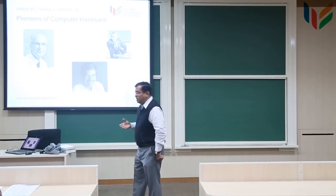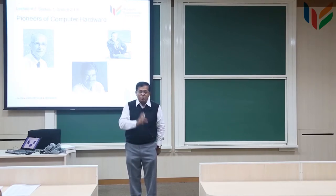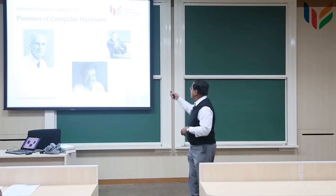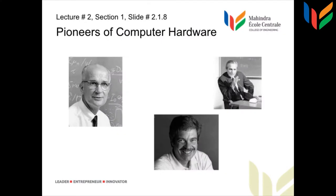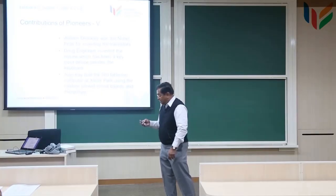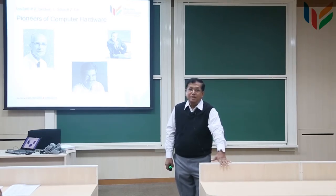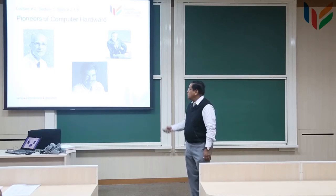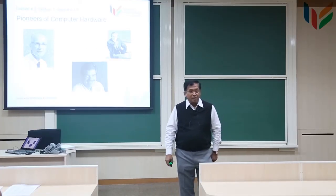There are positioning devices and pointing devices, and the mouse is a pointing device. The development of the mouse is the invention of Doug Engelbart. Now going back to the one on the left — his name is Shockley, William Shockley. He won the Nobel Prize for the transistor. The development of the transistor has been a very important and significant development in the evolution of computing machinery and computer science. He was at Bell Labs and developed the Shockley effect, and subsequently the transistor. He has been one of the pioneers in computer science.